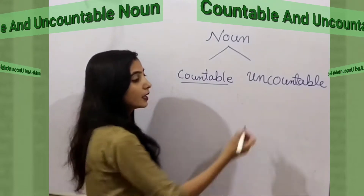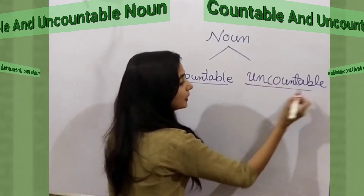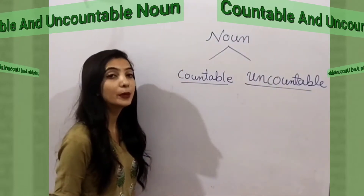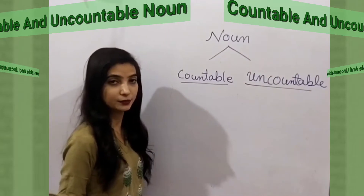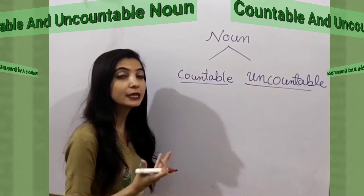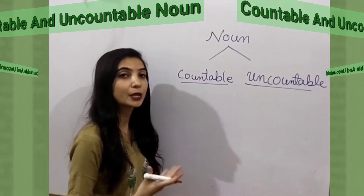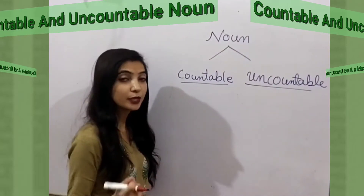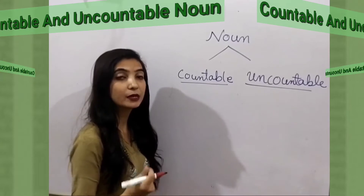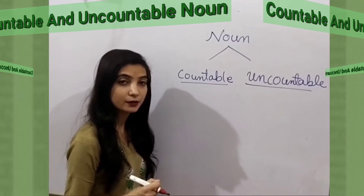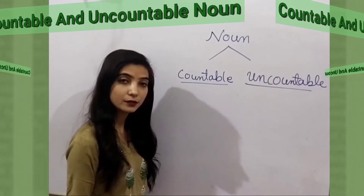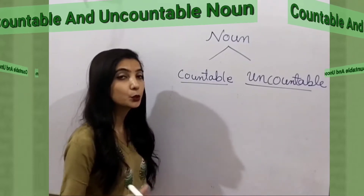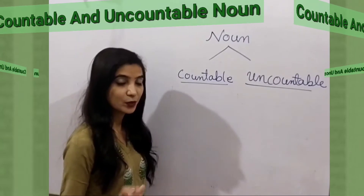But uncountable noun means the nouns which cannot be counted. For example, air, water, rice. We cannot count them as a rice, two rices, a air, two airs.